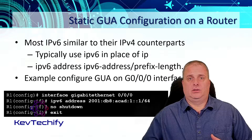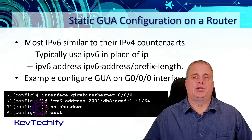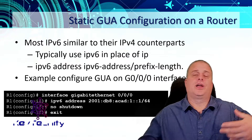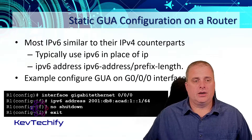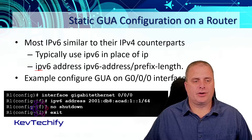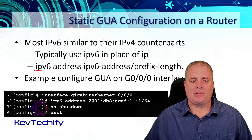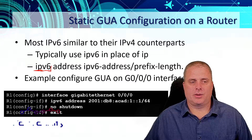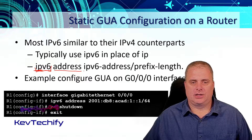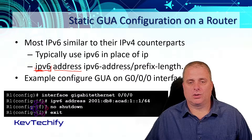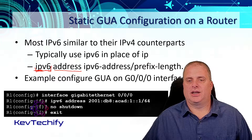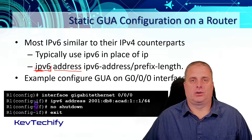On a router, it's almost the same commands as you would use to configure IPv4 as you use for IPv6. When you configure an IPv4 address, it's just "ip", but when we're doing IPv6, it's "ipv6" — so you need to remember to make that change. Then we say "address", give the actual address — 2001:DBA:ACAD:1::1 — and then put our slash and then our prefix number.